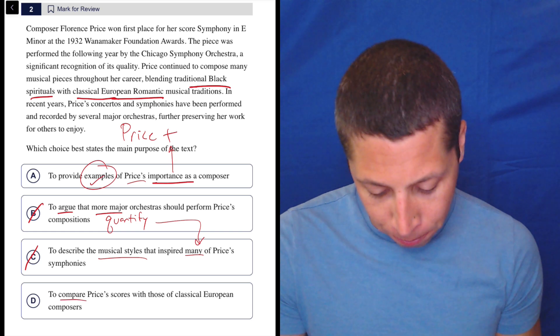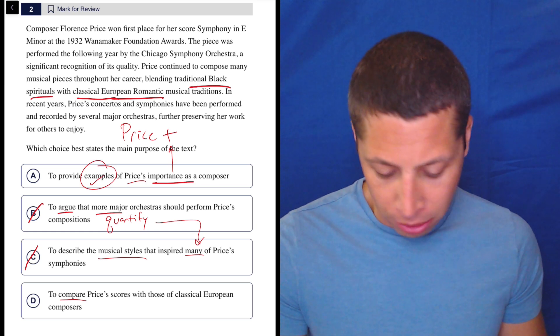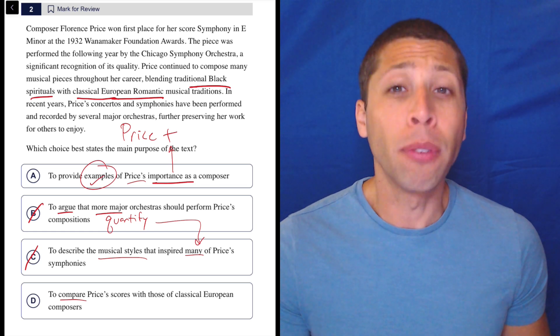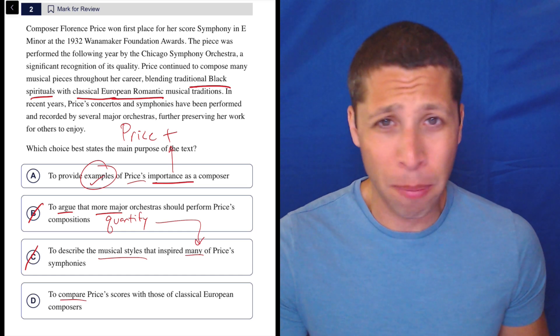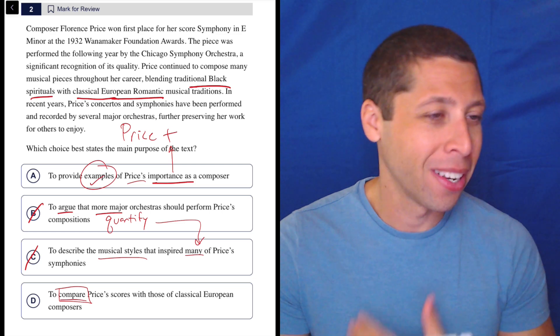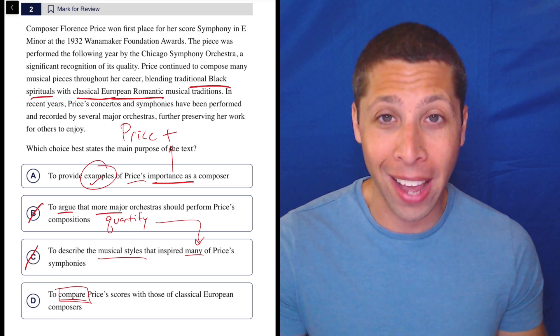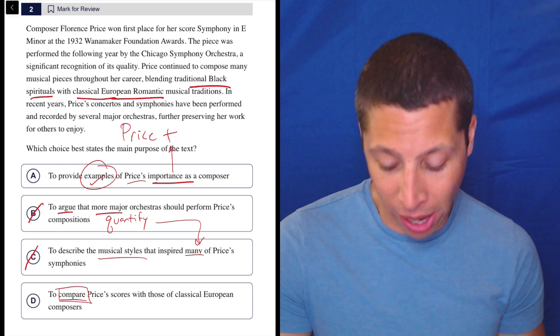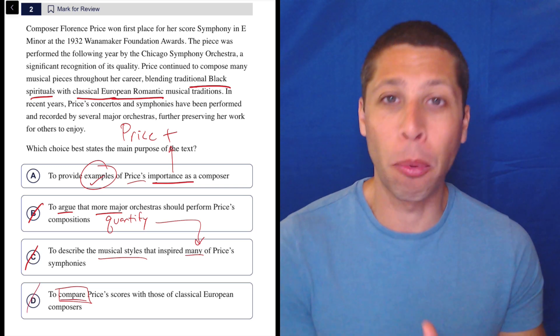D, to compare Price's scores with those of classical European composers. No, we do mention that she's maybe being influenced by those people, but we're not comparing them. So, literally, comparisons are one of those classic SAT traps, so that's why I noticed that word right away. Is the passage a comparison of things? No, it's all about one person, right? If we mention other people, it is only in support of Price.